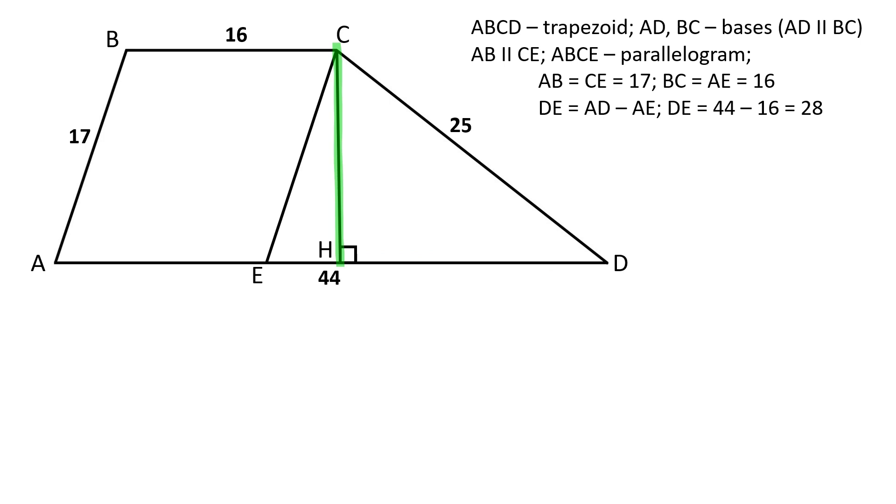Let's draw the altitude from the angle C to the side AD. If we assign EH as X, HD will be 28 minus X.